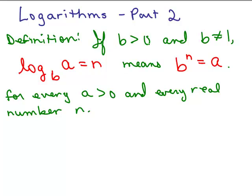If b is greater than zero and b is not equal to one, then log base b of a equals n means b to the n equals a. So we have a log form and an exponential form of the same equation and this is true for any a greater than zero. It's a positive number but n, that's the exponent, could be any real number. So b has to be greater than zero and not equal to one, a has to be positive, n can be any number.